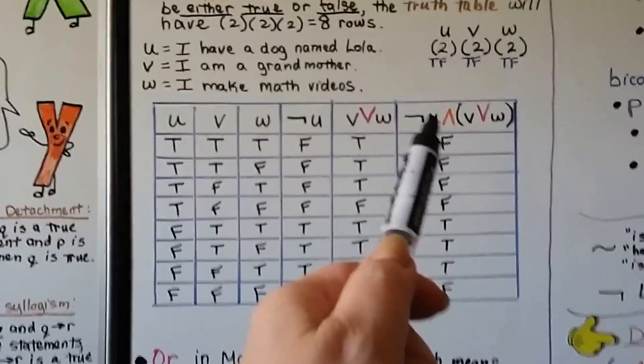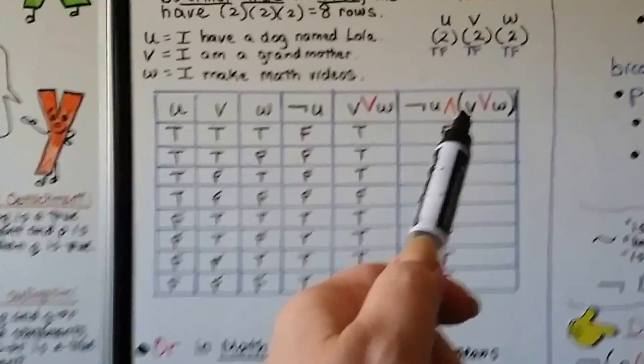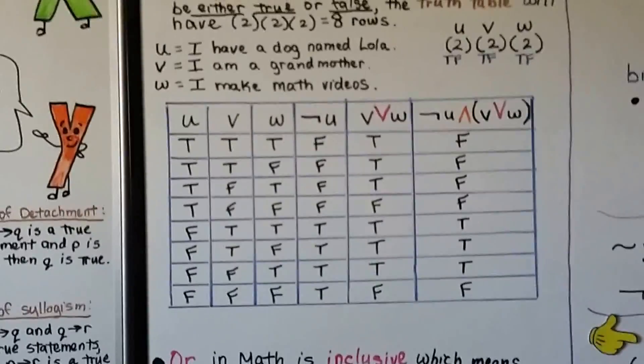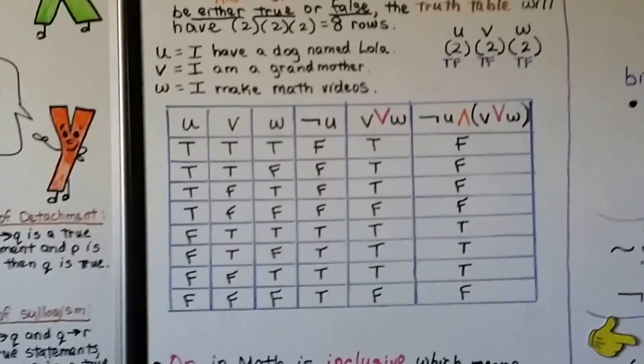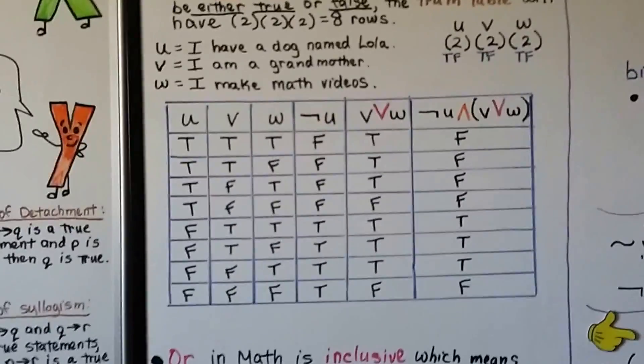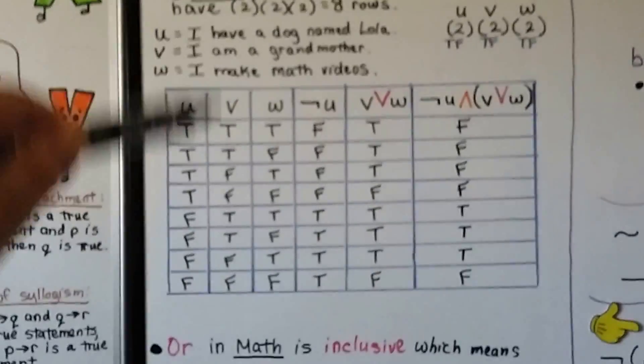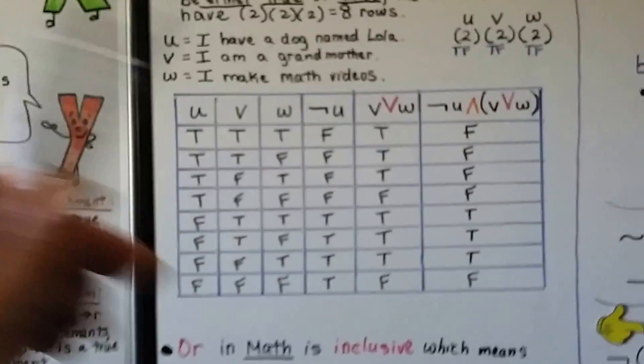And for our final one, it would be not U, so I don't have a dog named Lola and I am a grandmother or make math videos. Well, that's false because the first part is false. I do have a dog named Lola and it's saying I don't. We fill out the truth table according to the truth value of the statements.